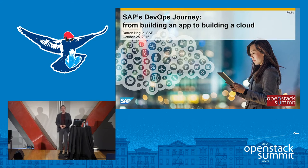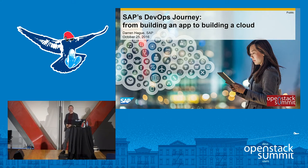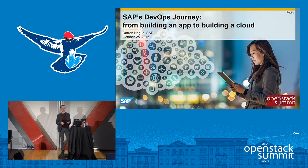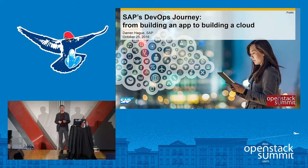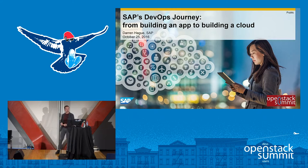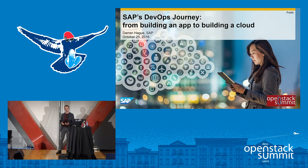Good morning everyone. My name is Darren Haig from SAP, and what I'd like to share with you today is how SAP went from a pilot project doing DevOps a few years ago to today where we're running a whole DevOps platform on an OpenStack-based cloud. What I hope you'll take away is the lessons we learned along the way and some of the things we've done with OpenStack to make it a really awesome DevOps platform.